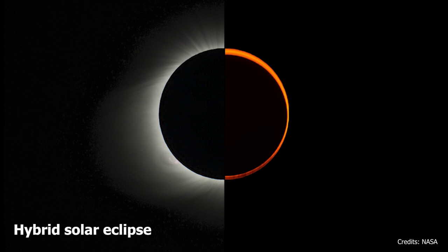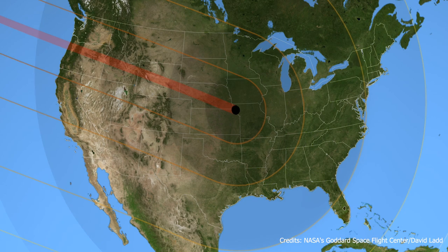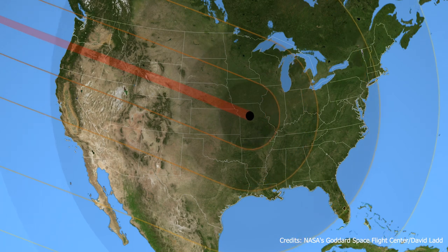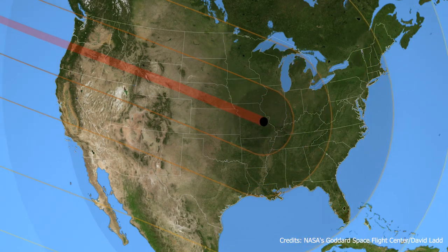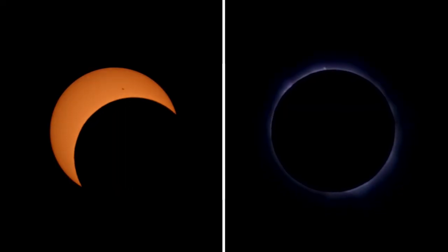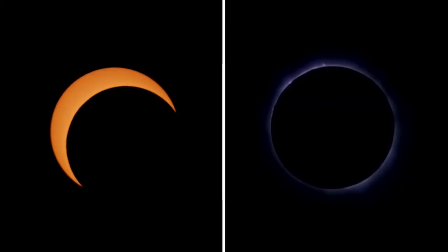The fourth type is a hybrid eclipse, a combination of two types of eclipses. Depending on the observer's location, a hybrid eclipse will look like an annular eclipse or a total eclipse.